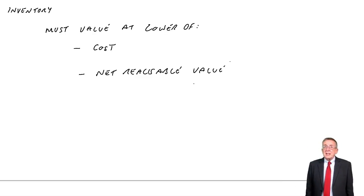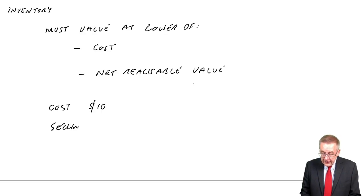and the realizable value is basically what you expect to sell it for. Normally, of course, you expect to sell things for more than they cost, otherwise you're going to be losing money. So if I buy and sell desks, if they cost me $10, and the selling price,